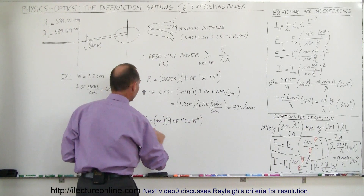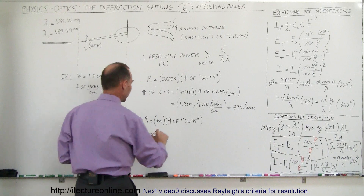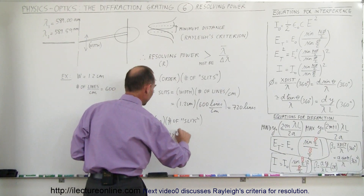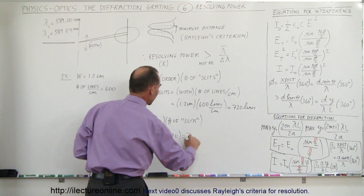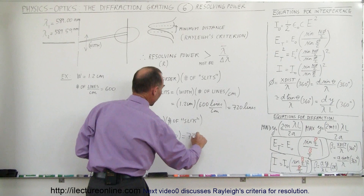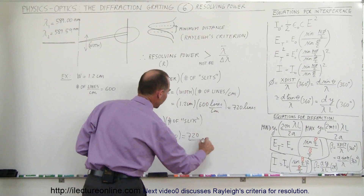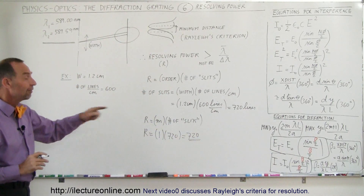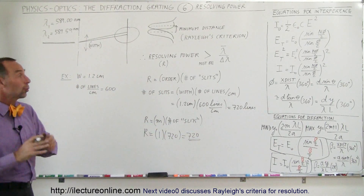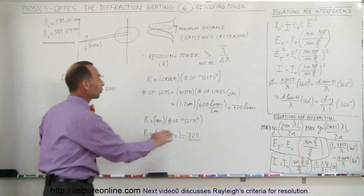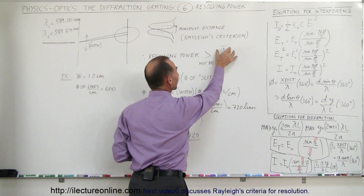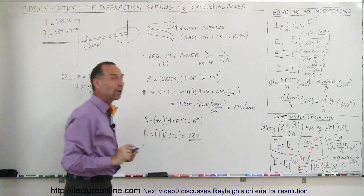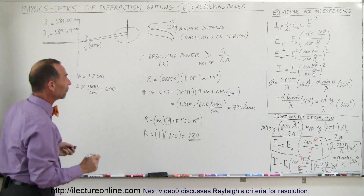The resolving power R equals the order m times the number of slits. So for the first order, that would be 1 × 720. The resolving power for the first order of that diffraction grating is 720. The question is: is that greater than the average wavelength divided by the difference in wavelength? Let's find out.